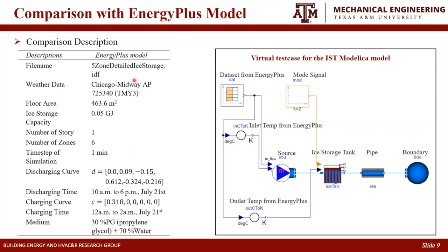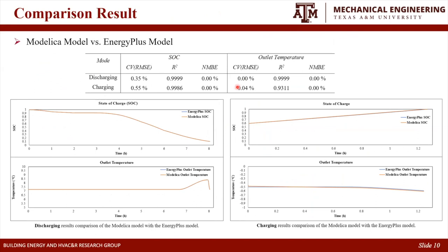We use this existing EnergyPlus model, and here are some descriptions for this model — for example, the example file, the weather data, and the cooling capacity. The red figure shows the virtual test bed for the S-storage tank Modelica model. The table shows the metrics of prediction accuracy — that is CVRMSE and MBE — for the state of charge and outlet temperature. These are outputs of the Modelica model and EnergyPlus model.